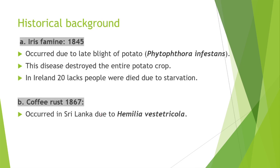Some historical background related to pathology: First is the Irish famine, which occurred due to late blight of potato caused by Phytophthora infestans in 1845. This disease destroyed the entire potato crop, and in Ireland, 20 lakh people died due to starvation.